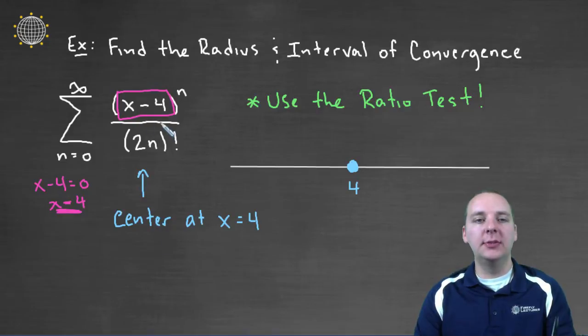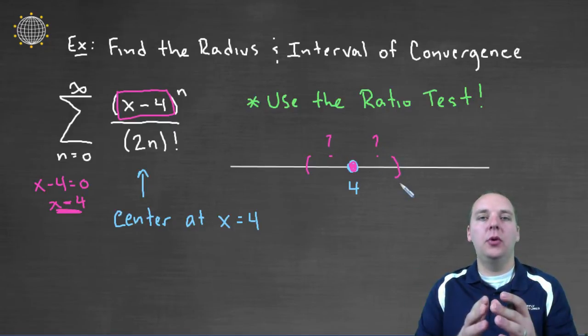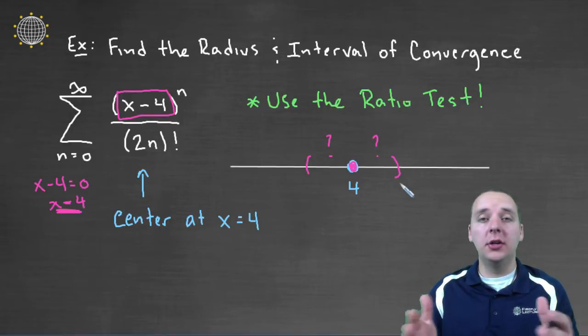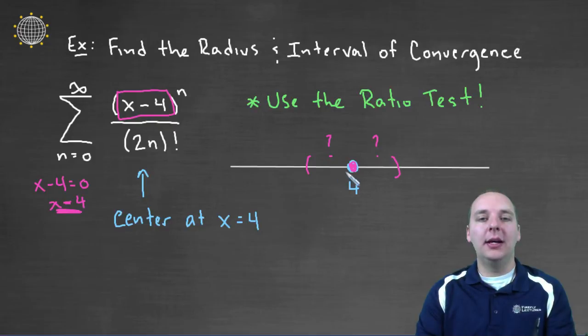And so four is where this power series is centered. So we can start there, and then what we know is that if there is an interval of convergence, then it will converge around four. It might be just a little ways around four, or a very wide margin around four, or no margin at all around four, but is centered at four.